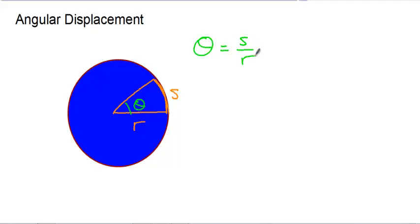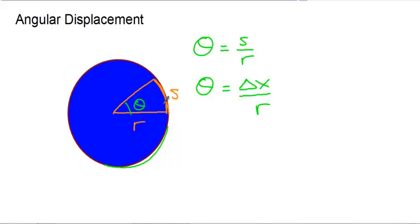The unit that angular displacement is measured in is a radian, and radians are going to be very important. We're going to do a lot of conversion from linear to angular variables, so make sure your angular variable is always in radians. Delta X is measured in meters, and the radius is also measured in meters, so the meters cancel each other out. Because we're dealing with a special ratio, we're left with a radian.